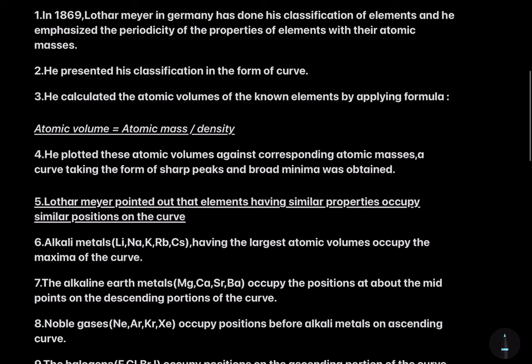He calculated the atomic volume of the known elements by applying the formula: atomic volume equals atomic mass divided by density. He then plotted these atomic volumes against the corresponding atomic masses. A curve taking the form of sharp peaks and broad minima was obtained.